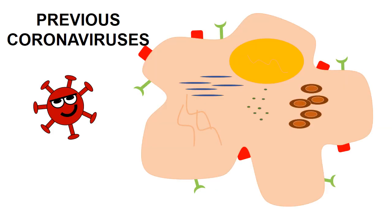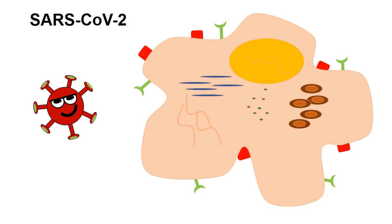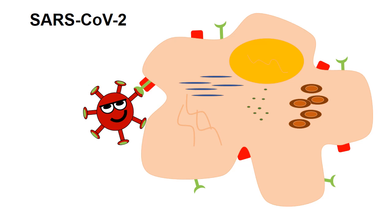It seems like previous coronaviruses do not have the same furin activation site and that the mutation that SARS-CoV-2 gained allows it to bind to the receptor with higher affinity than other coronaviruses.